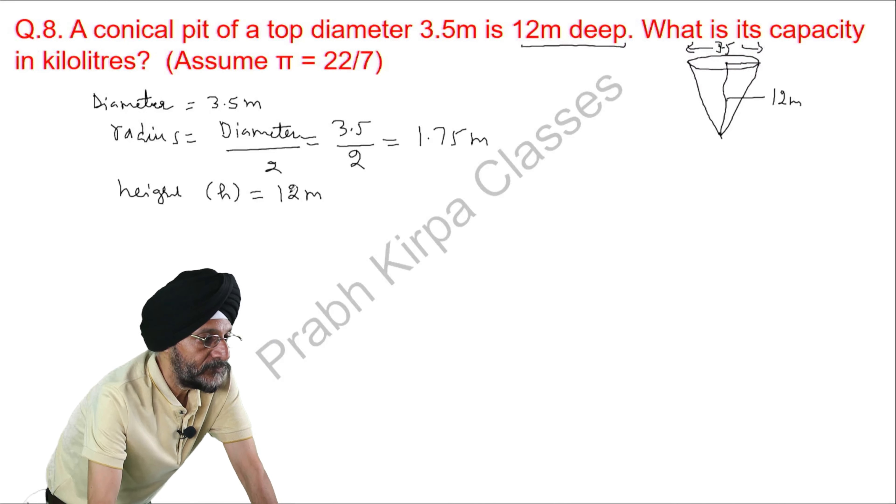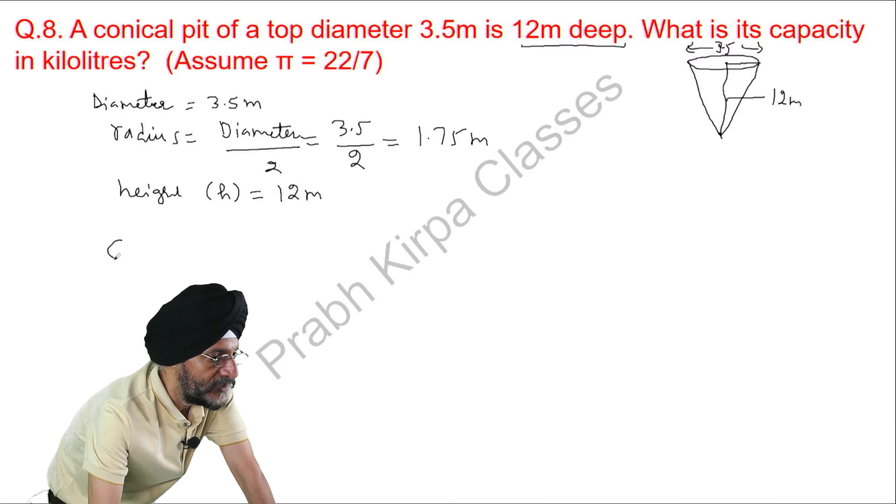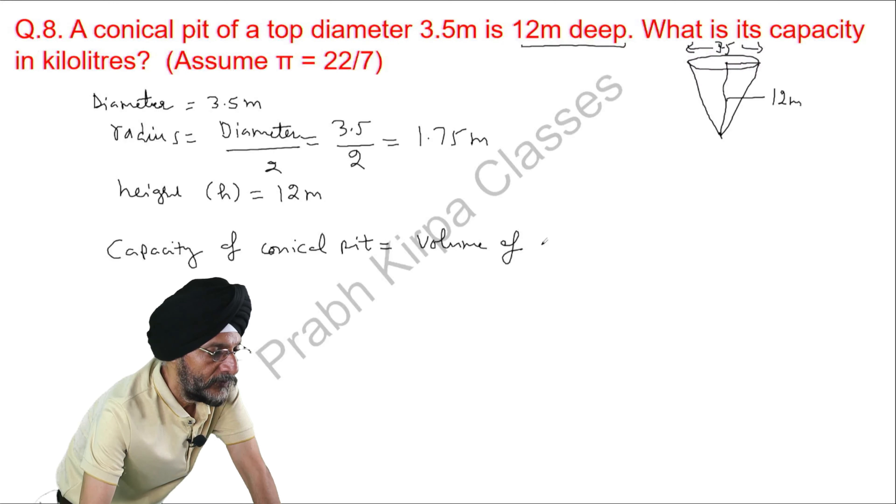So, we have to find the capacity. Capacity of conical pit is equal to volume of conical pit.